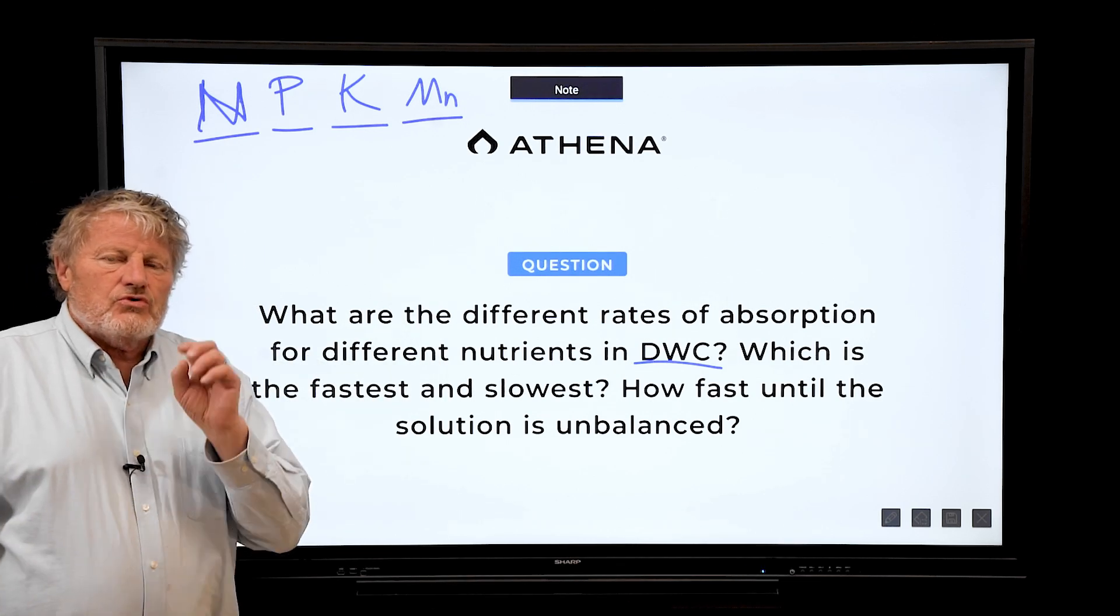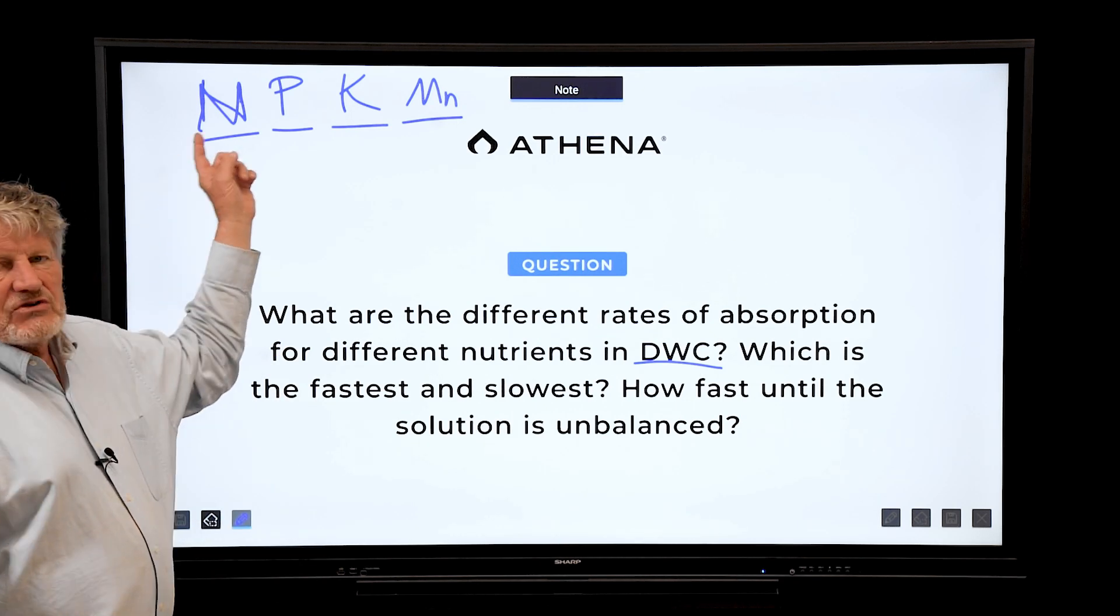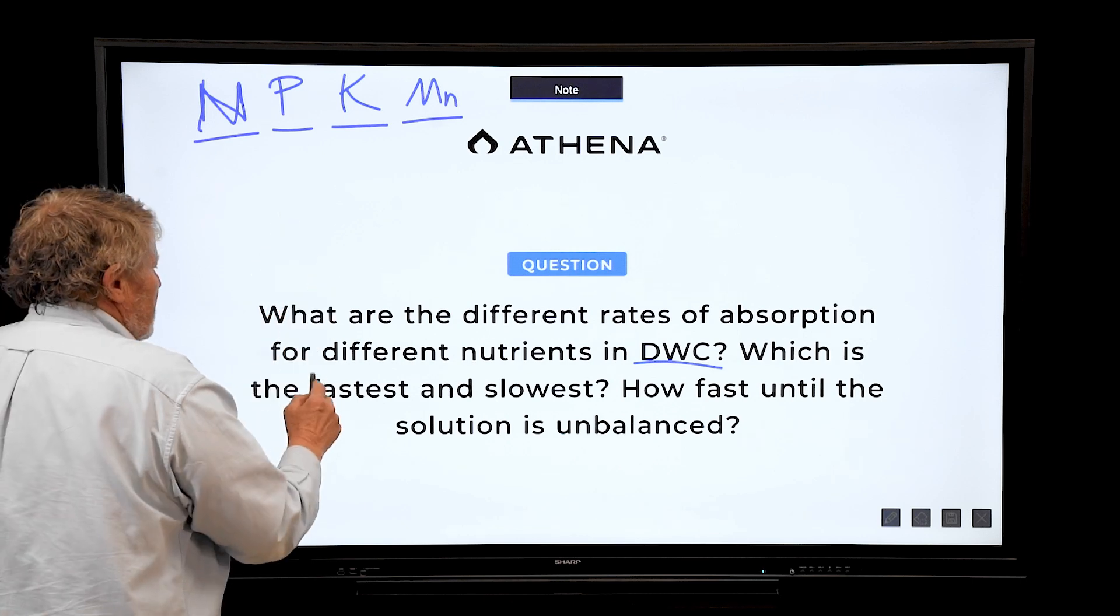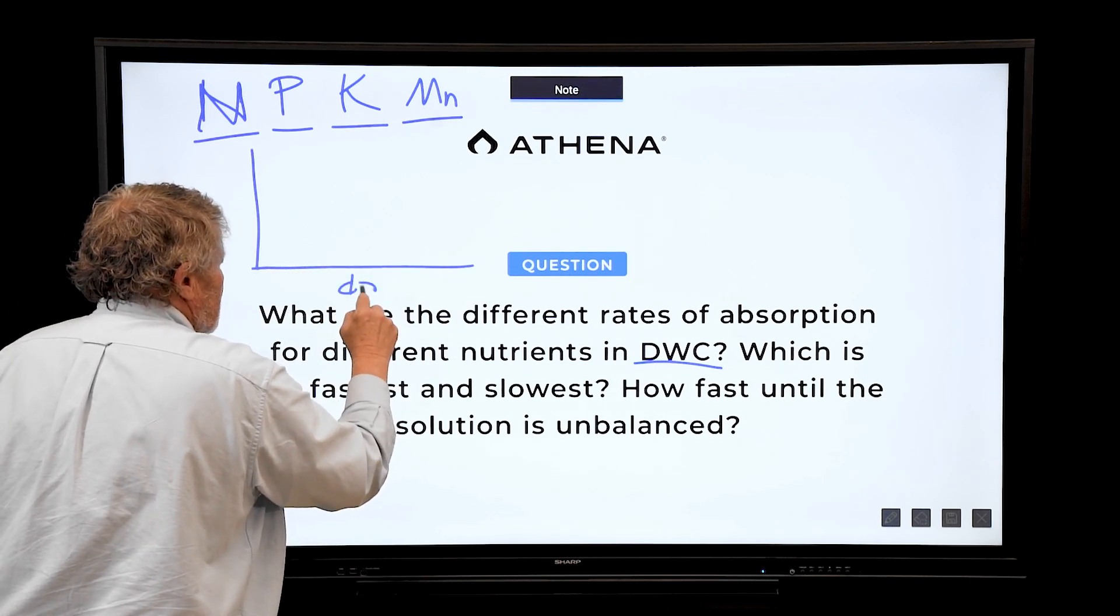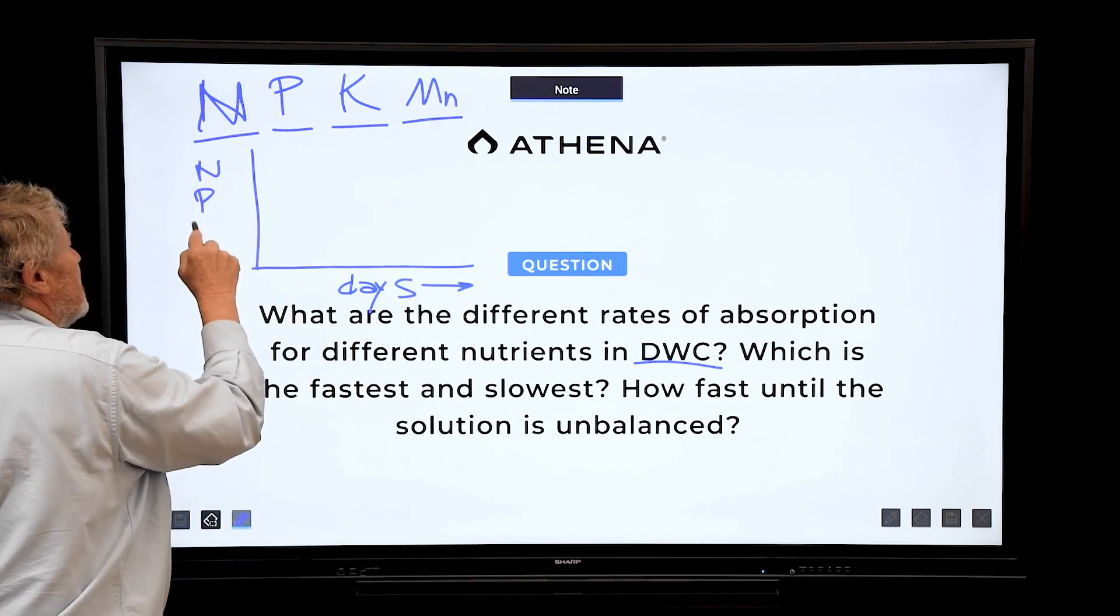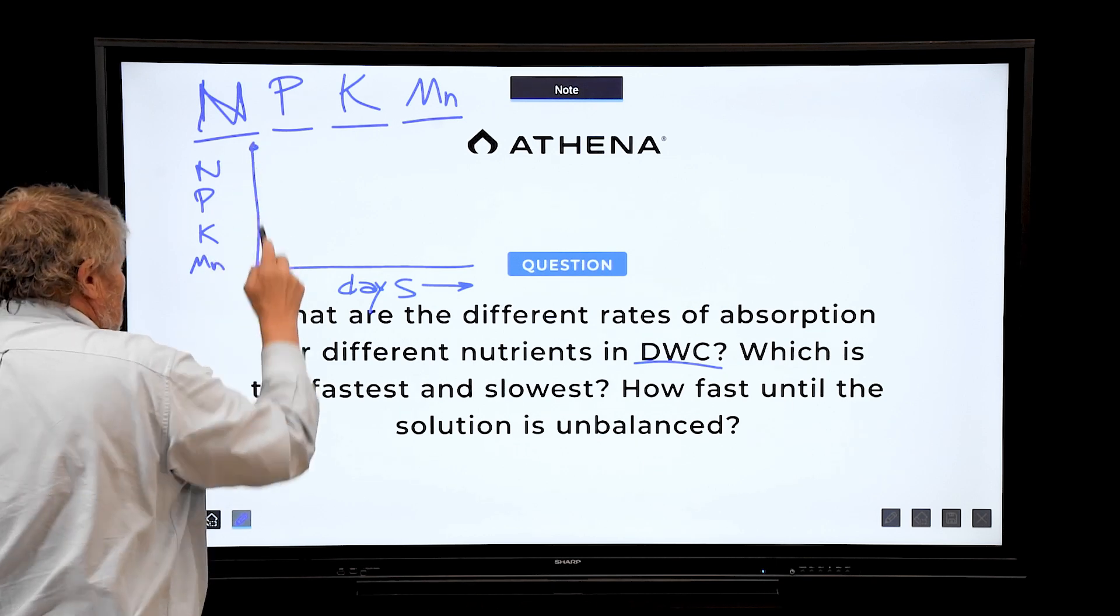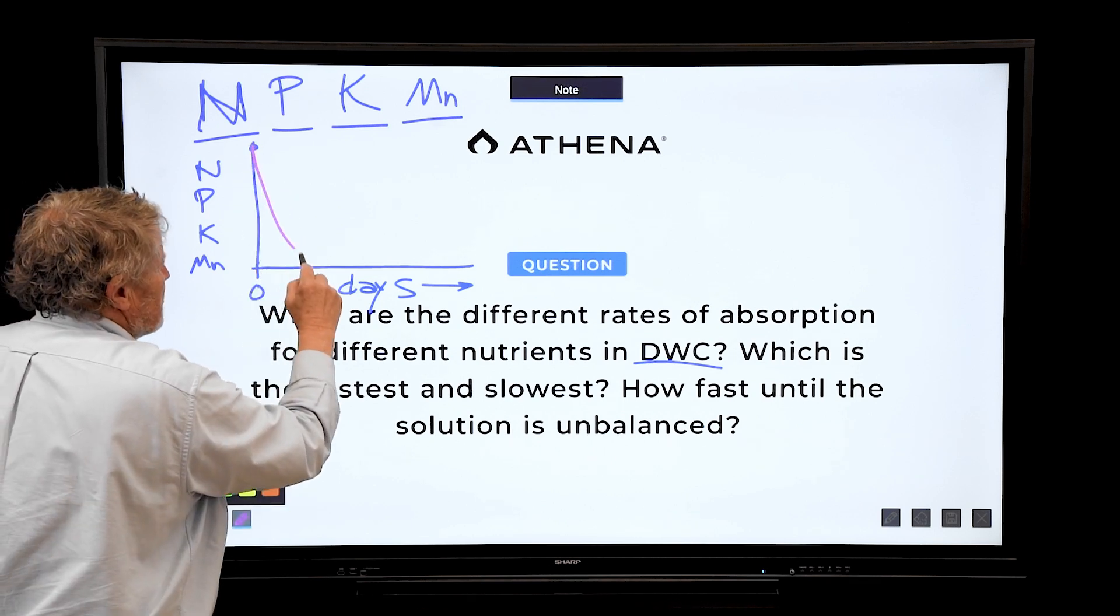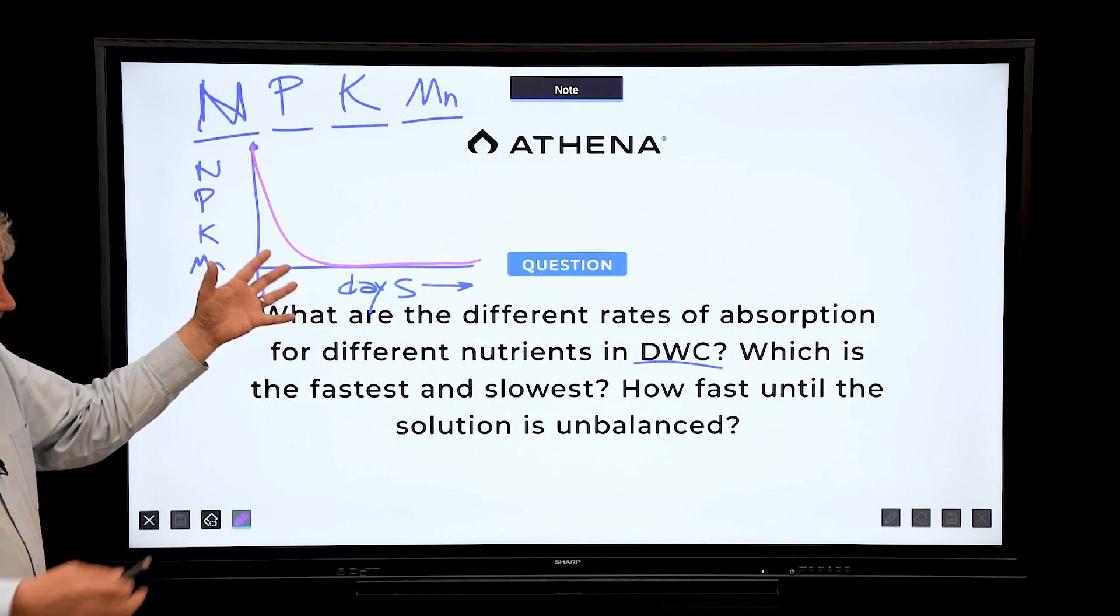Those are absorbed like lightning because all plants evolved to get these as fast as they can because they're so limiting in nature. So if we make a graph of these and here's days on this axis and we have NPK manganese here and here's zero. We start up here, change the color. Let's put this in purple. These things look like this.